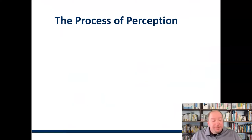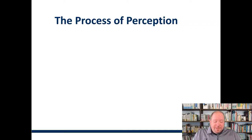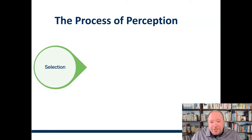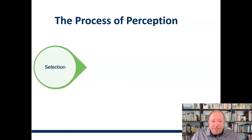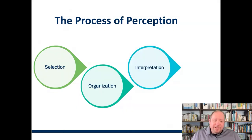There's a process for everything in communication, and perception is no different — it has a very specific process. We go through different stages when we perceive something, and it happens really quickly, so we don't always think about breaking it down. We start with selection — essentially deciding what we're going to pay attention to, which stimuli we're going to focus on. Then organization: how does this fit into our knowledge of the world, how do we categorize these things in a broad sense?